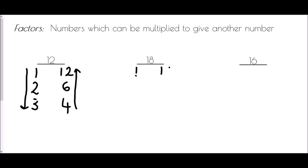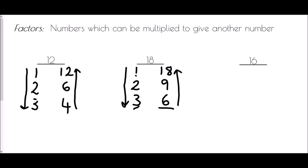For 18, the first pair of factors is always 1 and 18. Next we try 2: 2 times 9 is 18. Then 3: 3 times 6 is 18. Then try 4 — 18 is not in the 4 times table, so 4 doesn't work. Try 5 — doesn't work. Then 6: yes, but 6 is already in our list. That's our proof we have all the factors, having worked all the way down and back up.